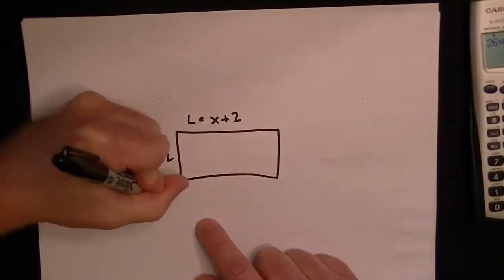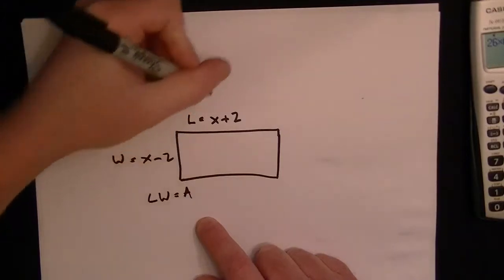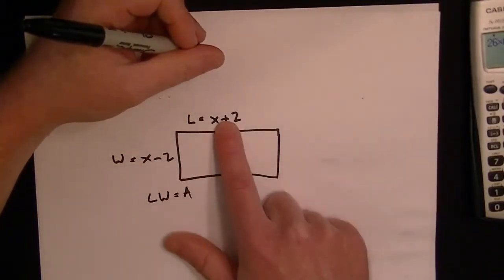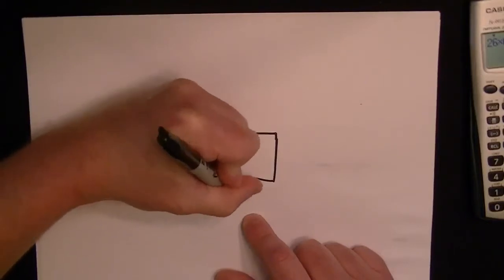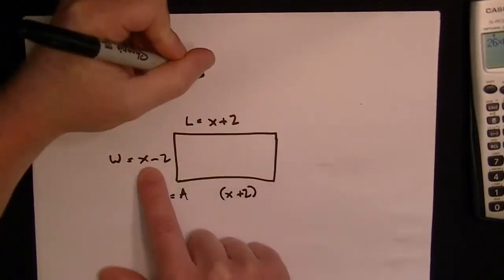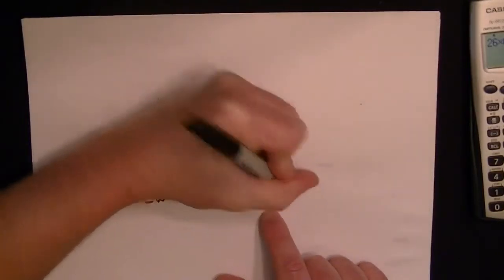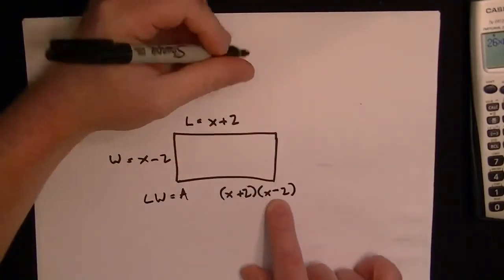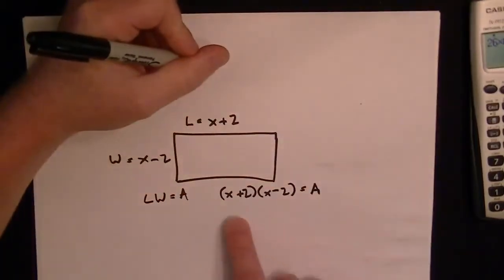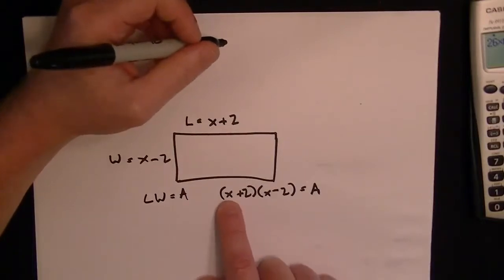We know the area of a rectangle is the length times the width, so L times W gives you the area. We substitute in: x plus 2 is the length and x minus 2 is the width. So the length times the width is equal to the area.